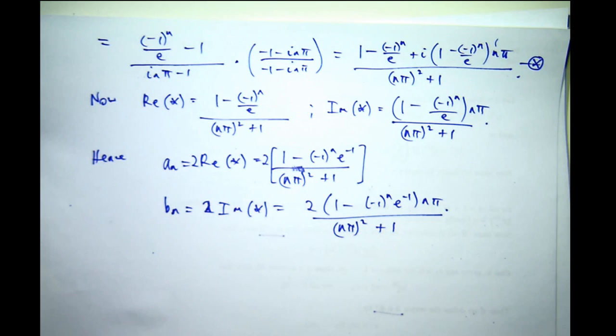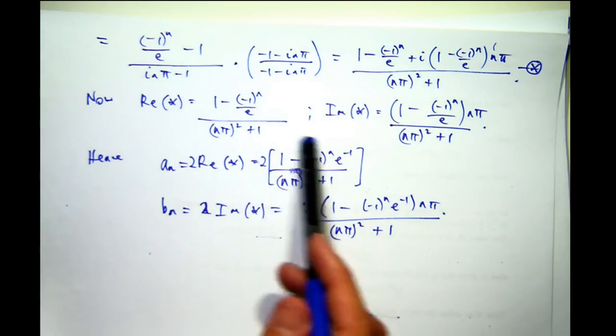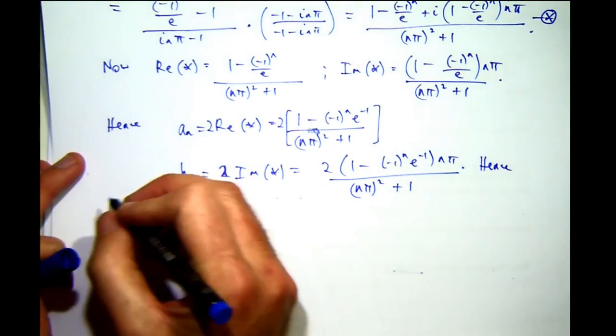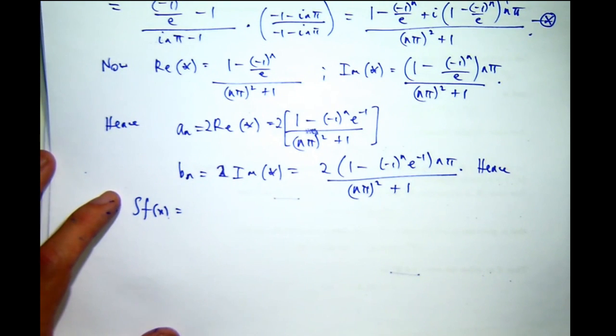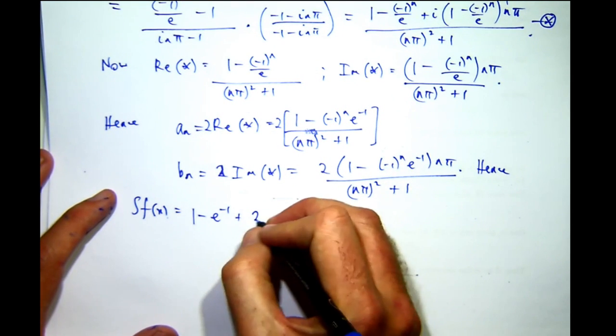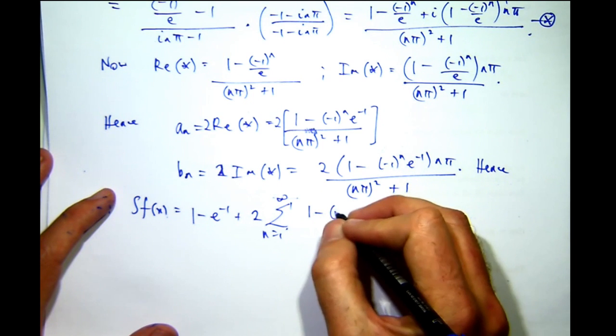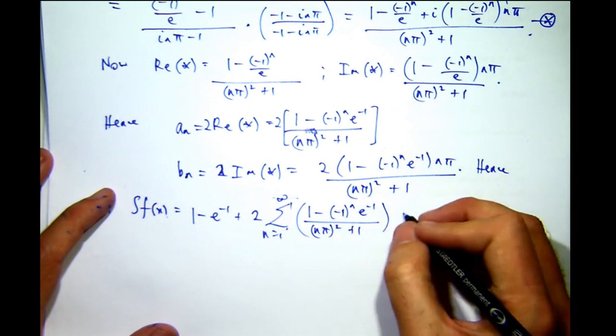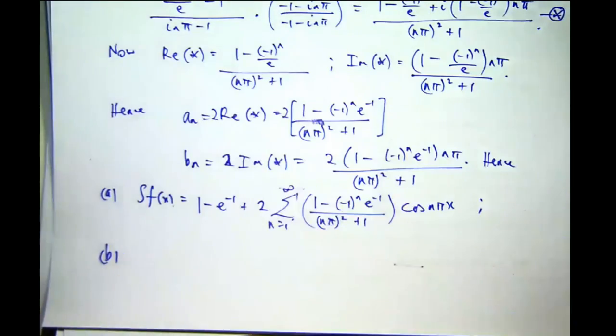So, once we have our Fourier coefficients, we can just write down the answer. So, in part A for our Fourier cosine series, we've got A nought of that plus this inside your summation. So, for part A, the Fourier series or the Fourier cosine series is the following. In part B, you want your Fourier sine series.